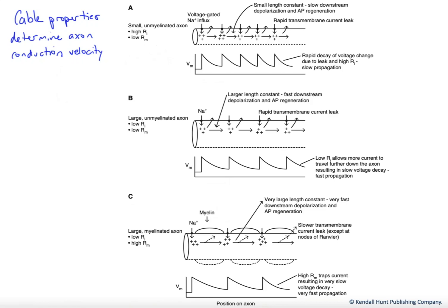In this video, we want to talk about the factors that affect the propagation velocity of nerve impulses along the axon. And that's going to depend largely upon what we refer to as cable properties of those axons.